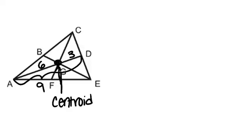For example, if BE was three units long, then BG would be one and GE would be two.